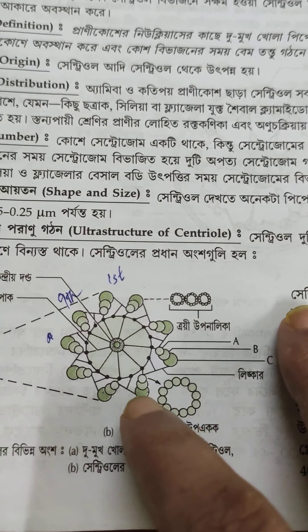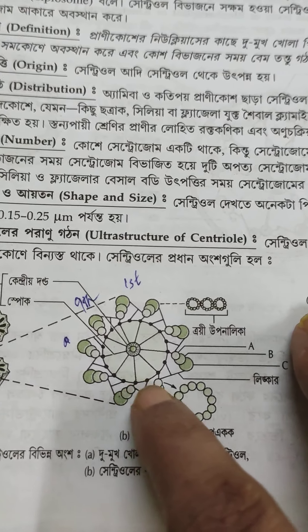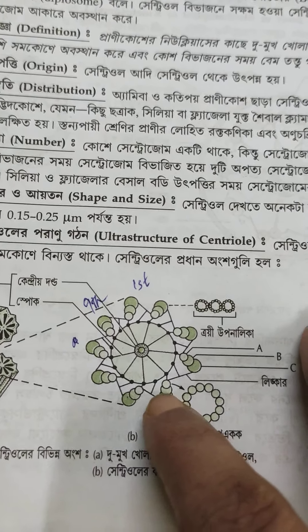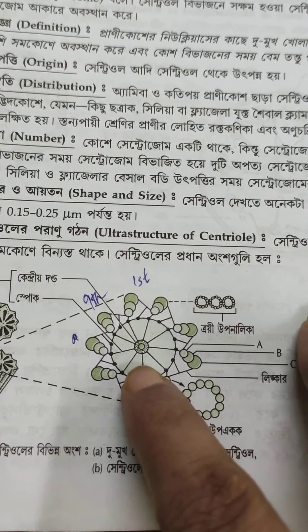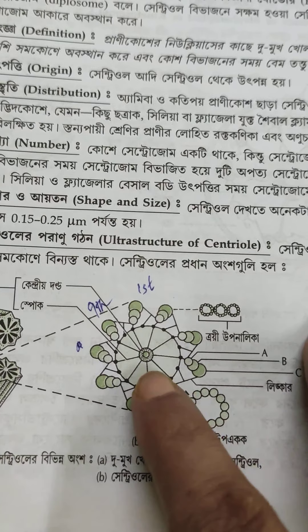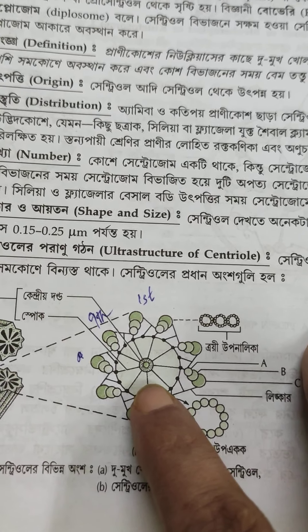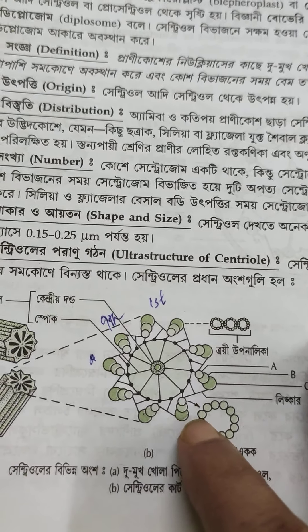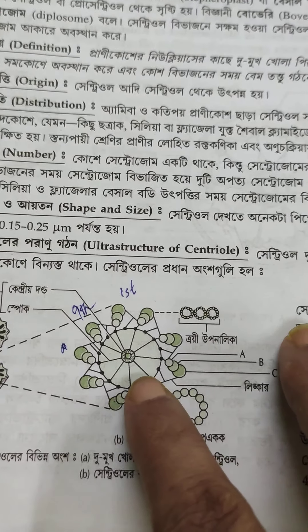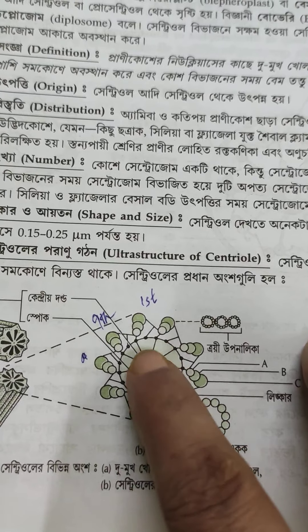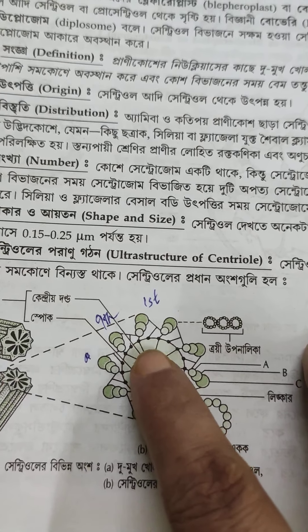This is A, B, and C. You have a link in this circle labeled A, B, C.